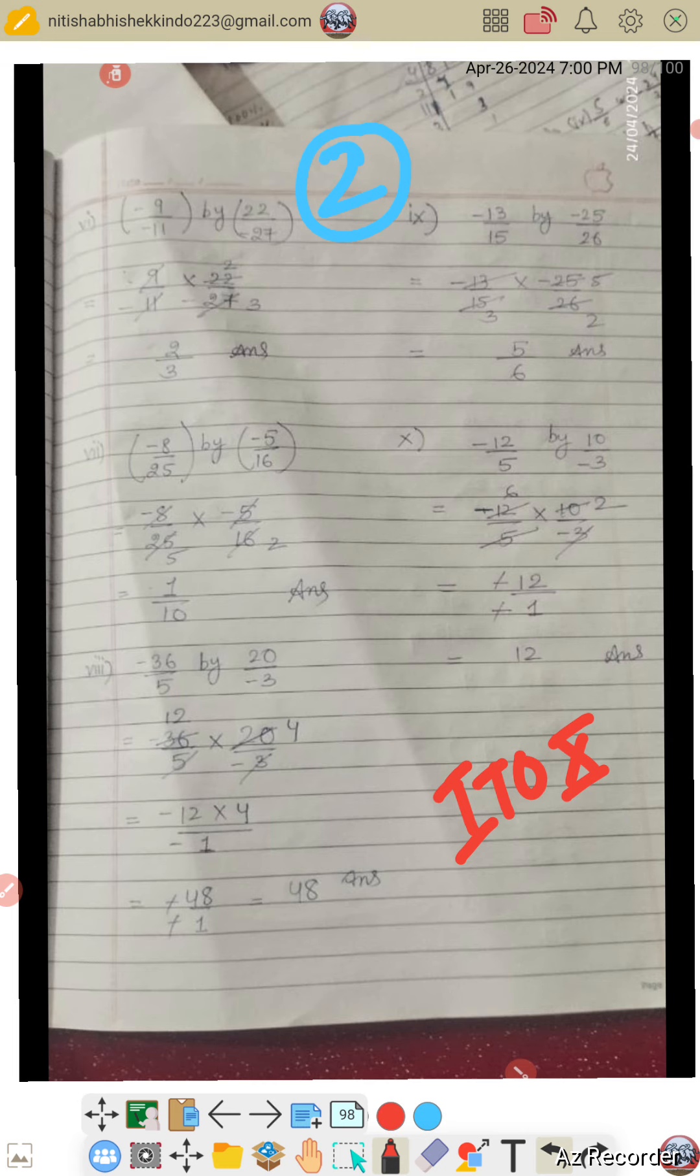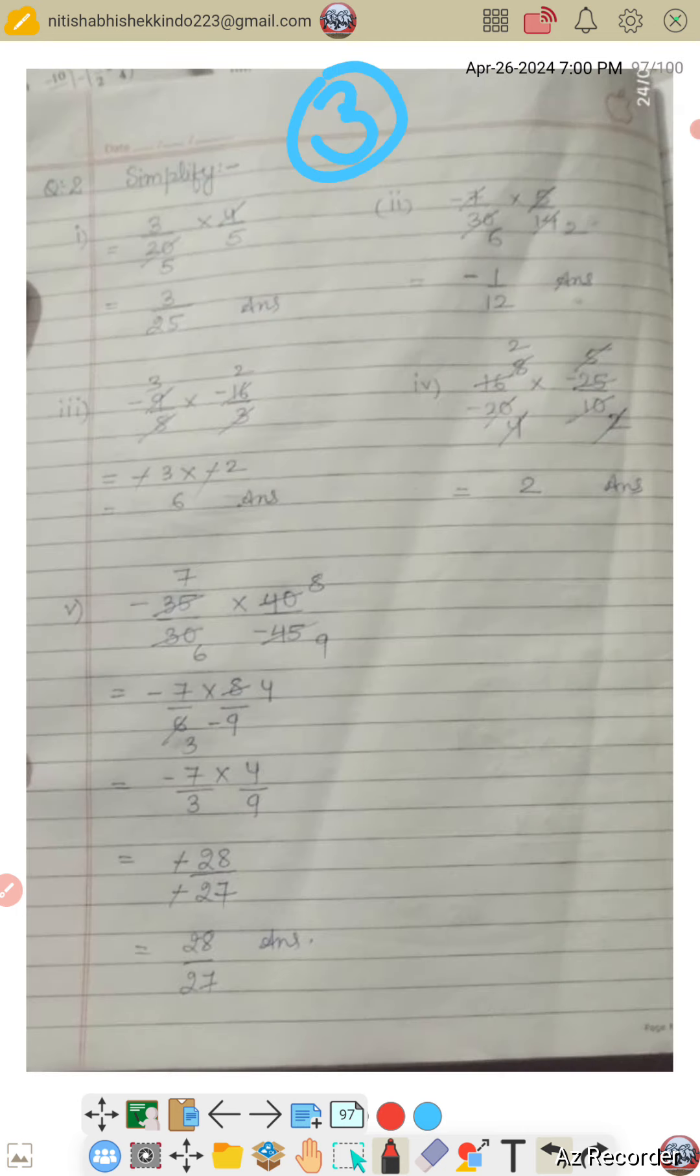Then third page. Two questions. Simplify. There is first, second, third, fourth, fifth. Clear?